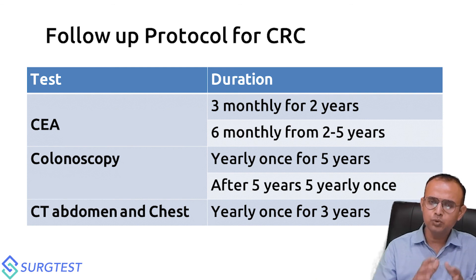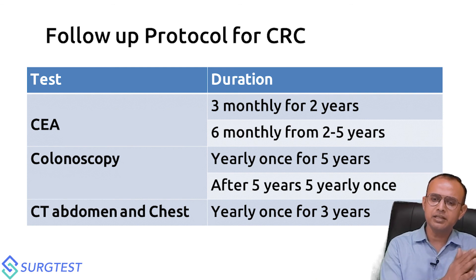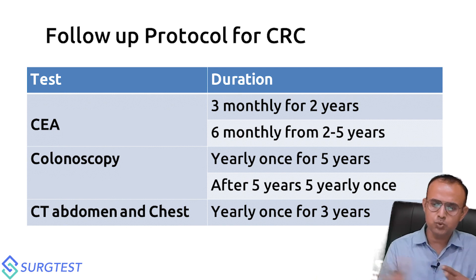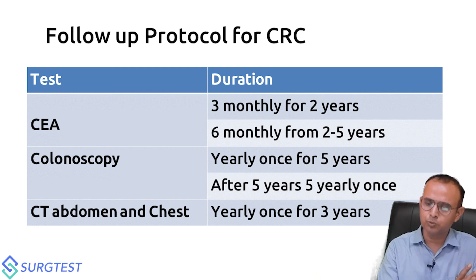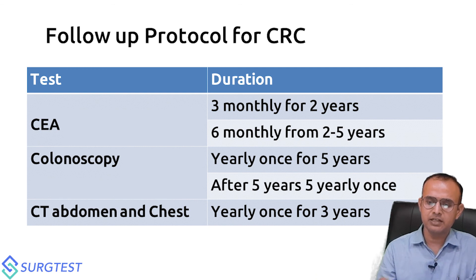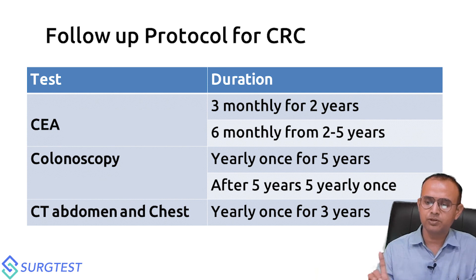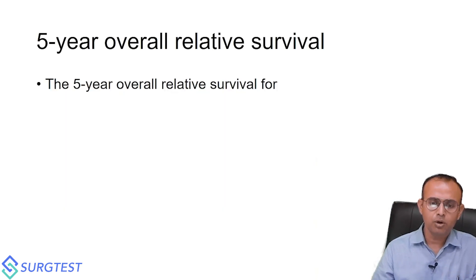For follow-up protocol in colorectal cancer: CEA levels every three months for two years, then every six months for years two to five. Colonoscopy yearly until five years, then every five years after that. CT abdomen and chest yearly for three years.